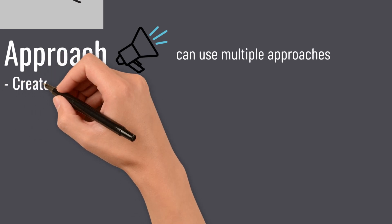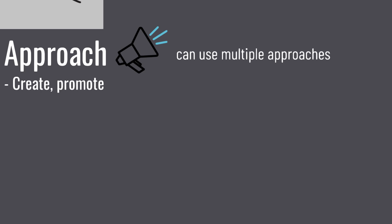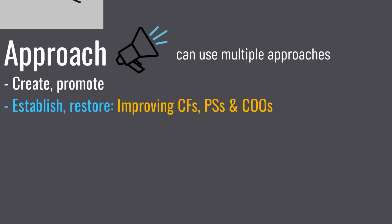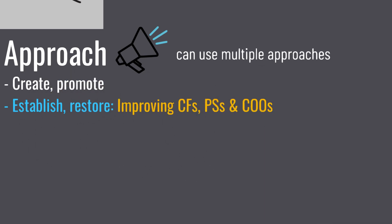The first approach is the create-promote approach, which is more focused on health promotion. There's then the establish-restore approach, which focuses on improving client factors, performance skills, and categories of occupation — these inform aims. Aims will be worded as 'improve independence in bathing' or 'improve muscle strength of the right elbow flexors,' so the verb used here is 'improve.'